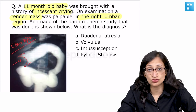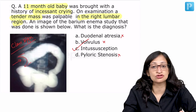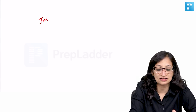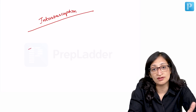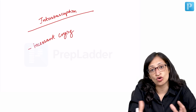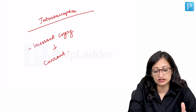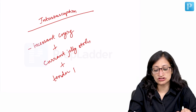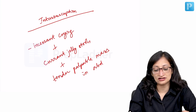The claw sign is what you get in intussusception — not in duodenal atresia, volvulus, or pyloric stenosis. When do you suspect intussusception clinically? The triad is: incessant or episodic colicky abdominal pain, red currant jelly-like stools (blood and mucus in stools), and a tender palpable sausage-shaped abdominal mass. This is the typical triad of intussusception.